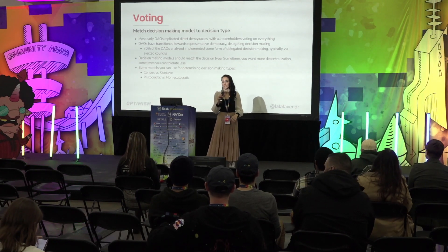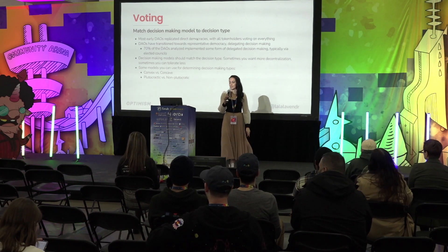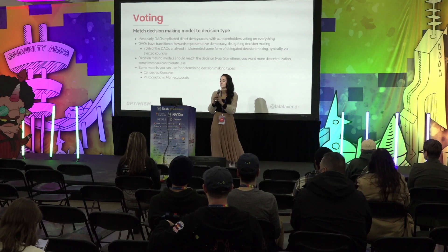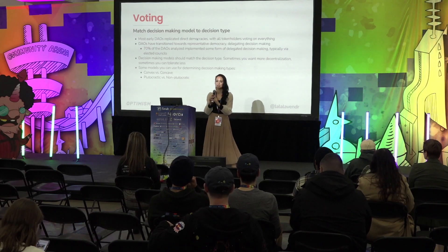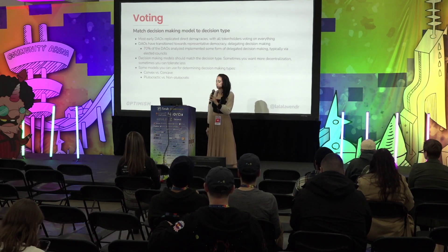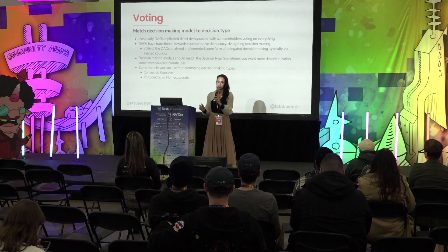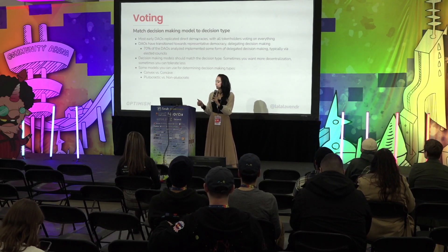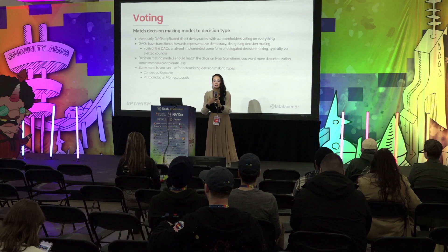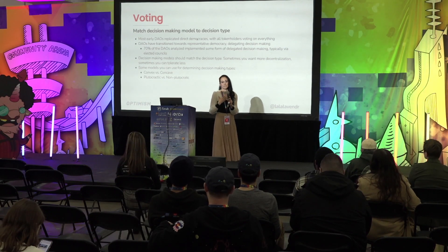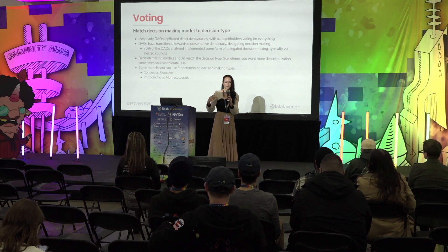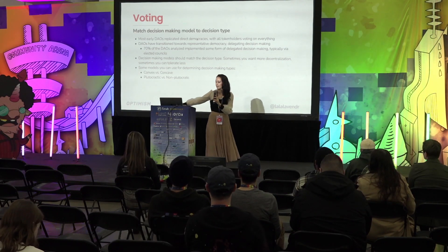Sometimes you need maximum decentralization and sometimes you can actually tolerate less. What you want to do is match the decision type to the decision-making model. Some helpful frameworks for thinking about that are Vitalik's convex versus concave decision-making, and what we think a lot about at Optimism is plutocratic versus non-plutocratic.